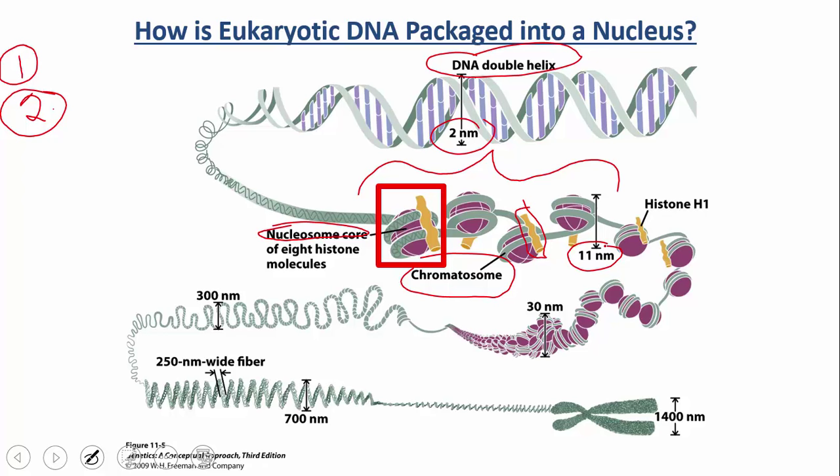After the beads-on-a-string level, you get further folding. The beads on a string fold further to give you a thicker filament called a 30 nanometer fiber. And then you get even higher levels of folding after that, ultimately reaching a full-blown chromosome — a chromosome in metaphase.